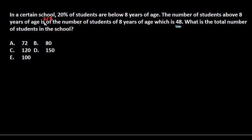Welcome back. Let's solve this problem: in a certain school, 20% of the students are below eight years of age, and the number of students above eight years of age is two-thirds of the number of students eight years of age, which is 48. Once you start reading this problem it seems very complicated, but it's not — you just need to solve it systematically and sequentially.